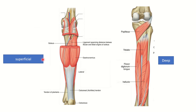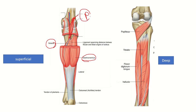Here we can see the superficial group of the posterior compartment of the lower leg. This muscle here is the gastrocnemius, one of the superficial muscles. Then S for soleus, and the other one is plantaris — here we can see its long tendon fiber arising from the side of the popliteus. The superficial group mnemonic is GSP.